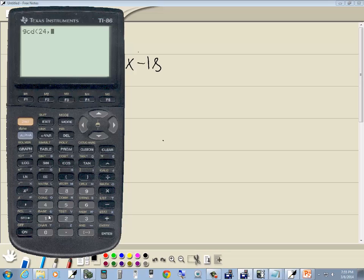Now I'll do 24 comma 18, and I'll put a closing parenthesis for completeness sake, and then press Enter. That tells us our GCF is 6.